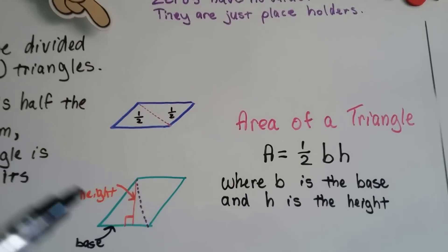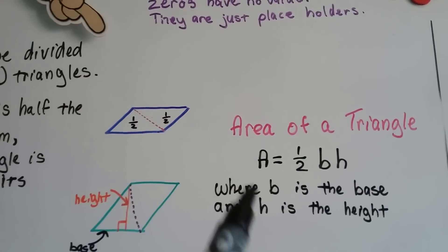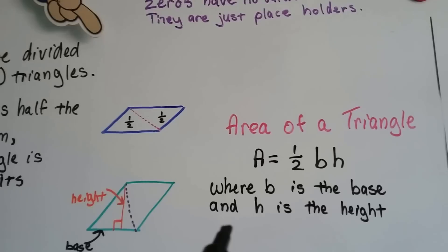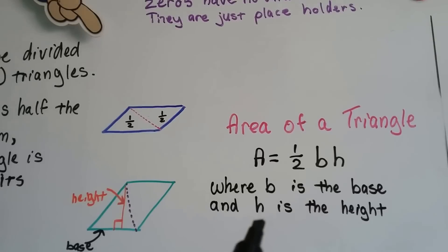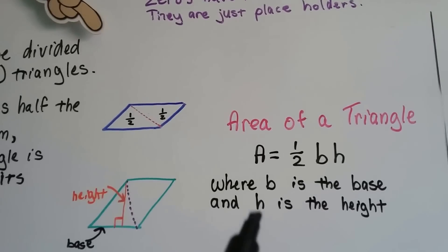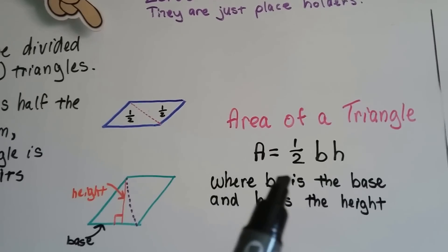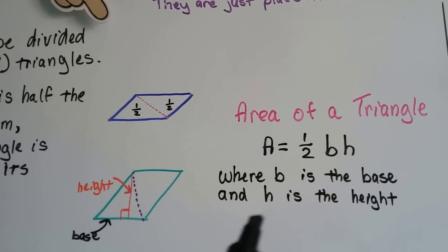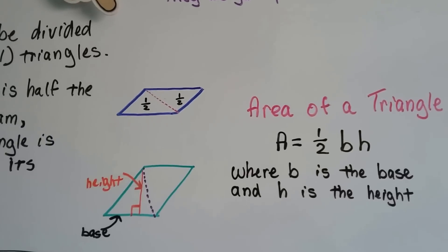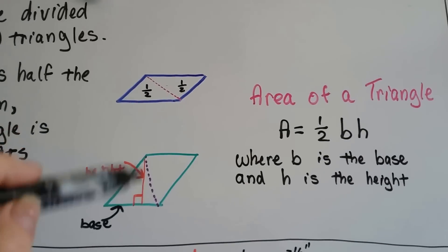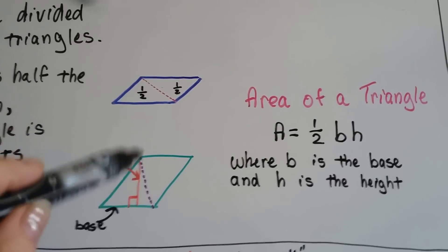The formula for the area of a triangle is A equals half bh, where b is the base and h is the height. So the area is half of the base times the height. And remember, the height is the perpendicular height.